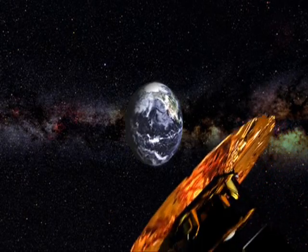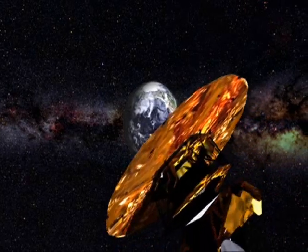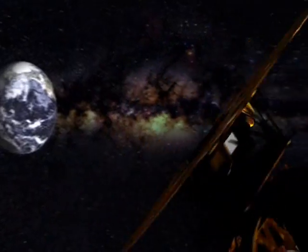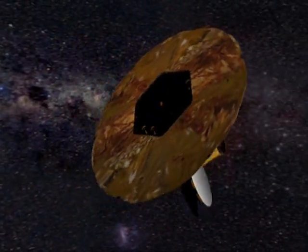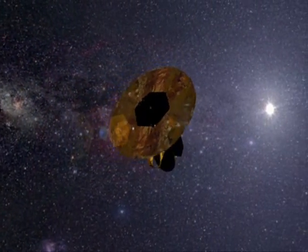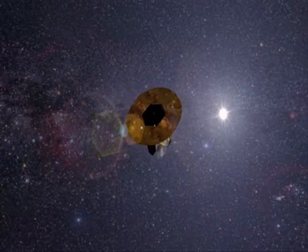NASA's Wilkinson's Microwave Anisotropy Probe, or WMAP, was launched on June 30, 2001 aboard a Delta II launch vehicle from NASA's Kennedy Space Center.